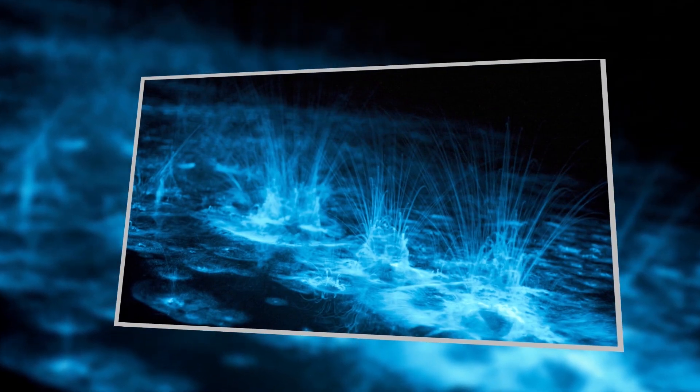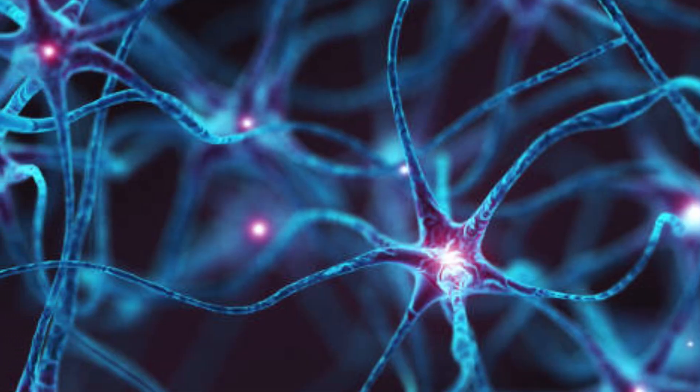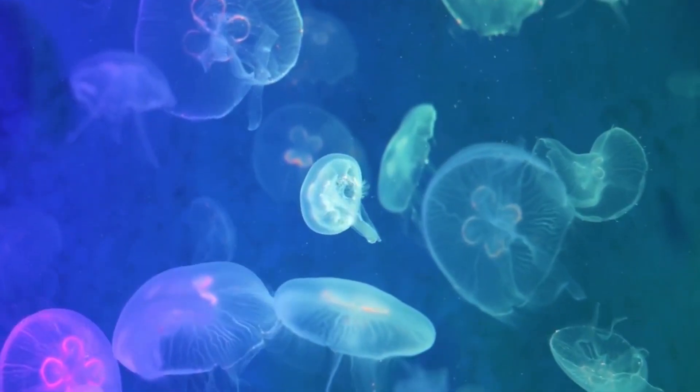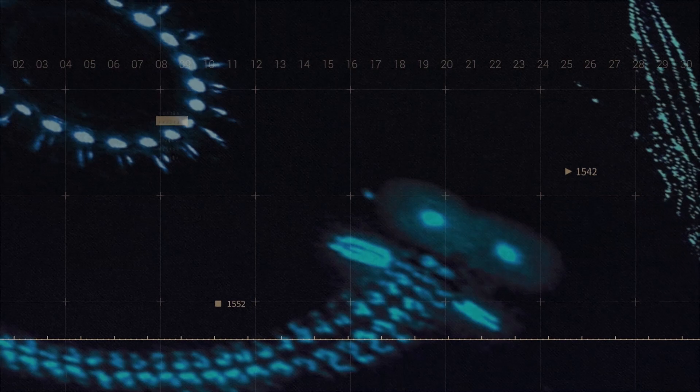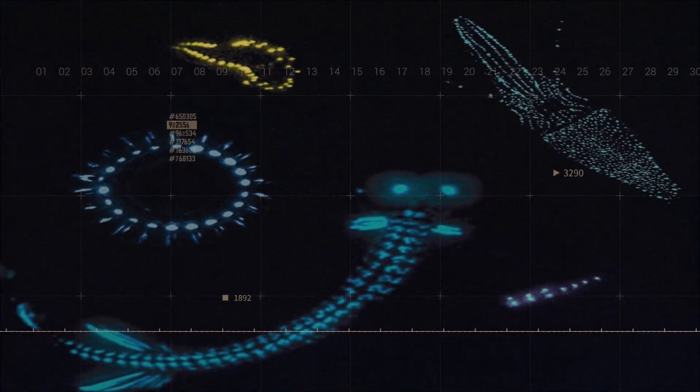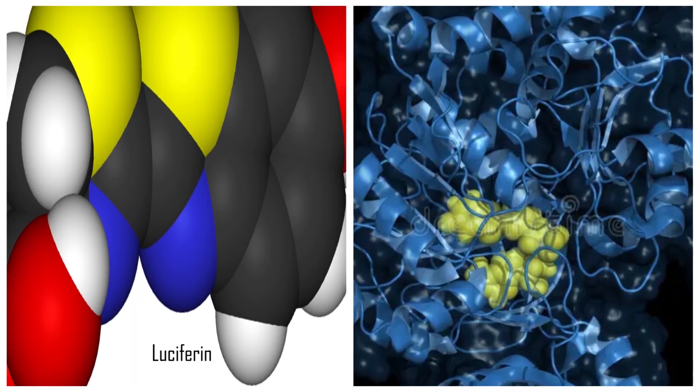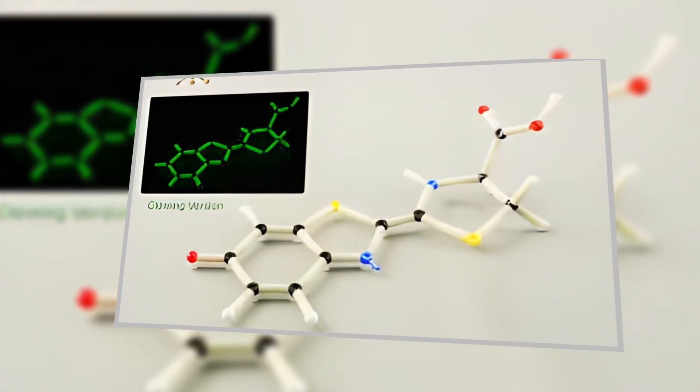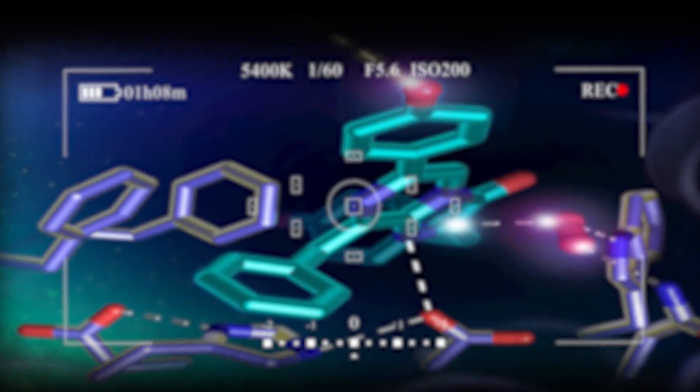Now that we've explored the why of bioluminescence, let's delve into the how. The ability to produce light is a complex biological process that has evolved independently multiple times in different species. This convergent evolution underscores just how valuable bioluminescence is as a survival strategy in the deep sea. At the heart of bioluminescence are two key components, a molecule called luciferin and an enzyme named luciferase.